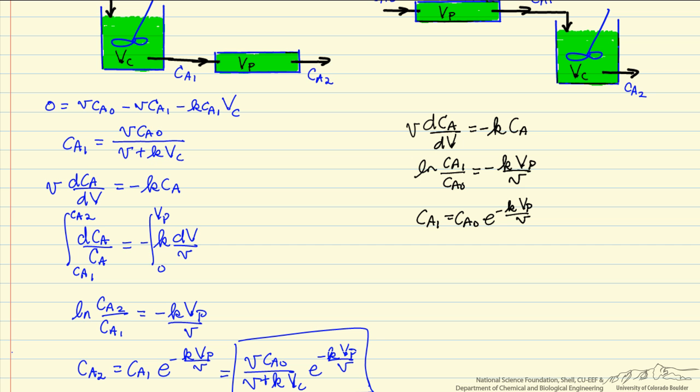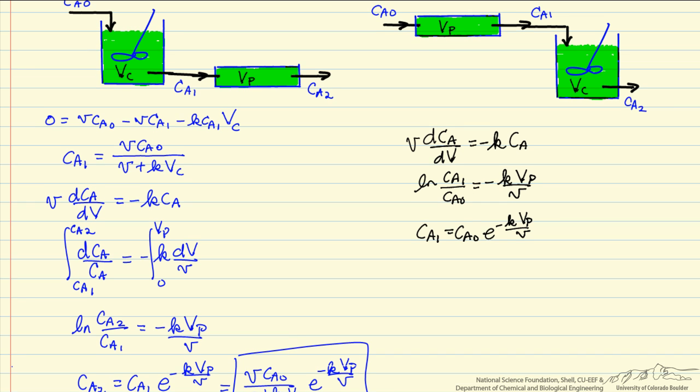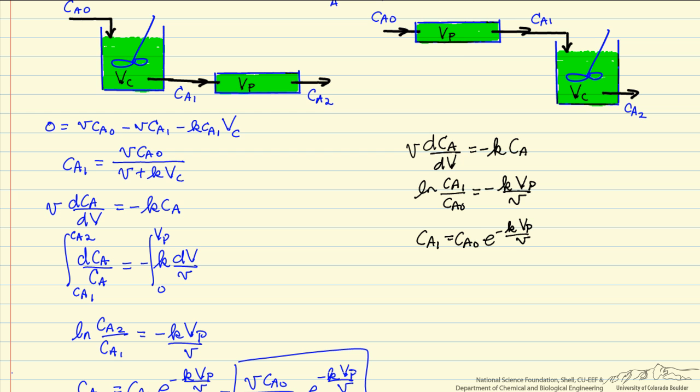So I have written down the equation now for the system here, the plug flow reactor. The inlet concentration is Ca0 and the outlet is Ca1, so I get a similar relation to what I have derived before.